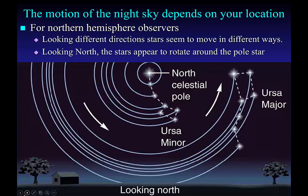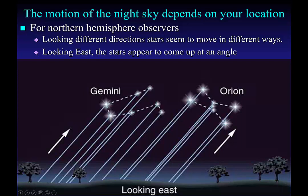From our perspective, looking north, you can see that the stars appear to rotate around the pole star — those are called circumpolar stars. Whereas if you look towards the east, you'll see that stars come up at an angle. You can actually measure that angle: it is 90 minus your latitude. So if you're at the North Pole, your latitude is 90, and 90 minus 90 is 0 — the stars would appear to be going horizontally. If you're at the equator, 90 minus 0 is 90, so the stars come up directly vertical. For Tampa, our latitude is 28 degrees, so the stars come up at an angle of 62 degrees from the horizontal.